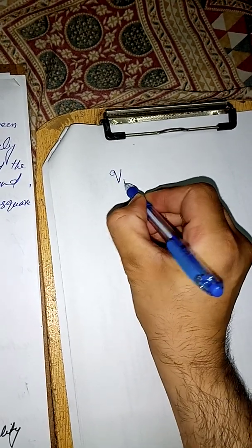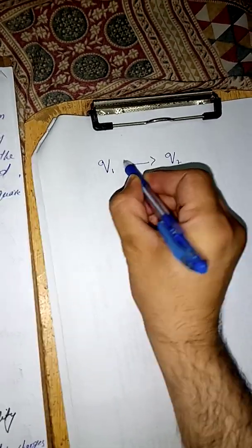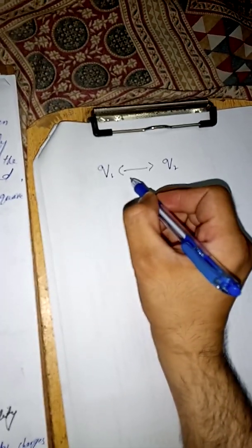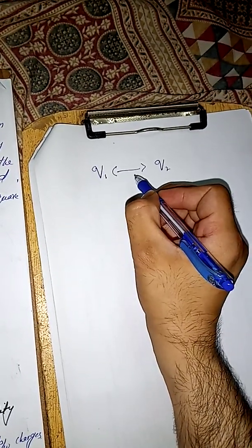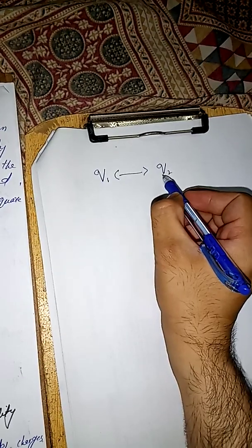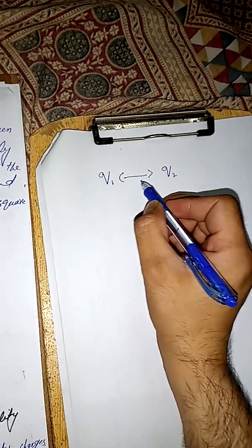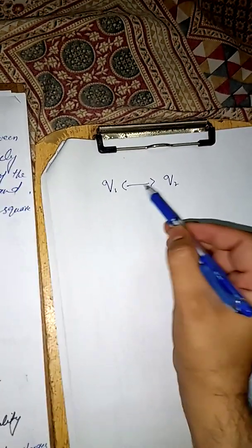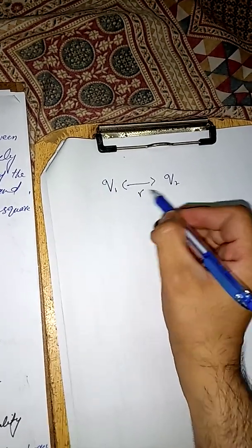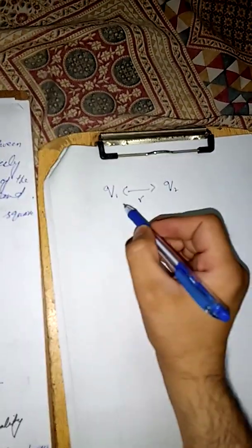This means that if you have two charges q1 and q2, there exists a force between them. This force may be attractive or repulsive. The magnitude of force depends upon the magnitude of the two charges — greater the magnitude, greater will be the force. Also, the force depends upon the distance r between the charges — greater the distance, smaller will be the force.